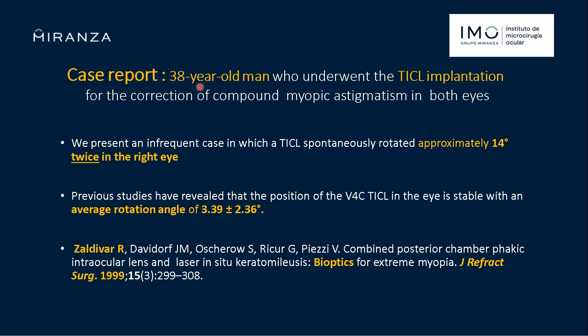The case is about a 38-year-old patient with myopic astigmatism, who was implanted with phakic toric lenses in both eyes. The right eye suffered, on two separate occasions, a rotation of 14 degrees — an infrequent case in the literature.